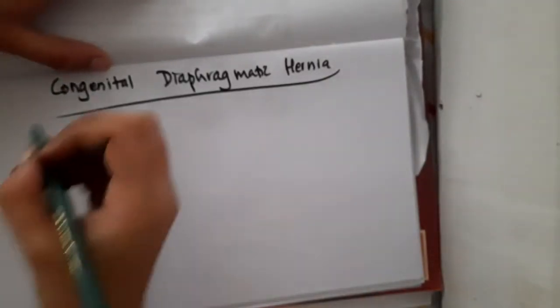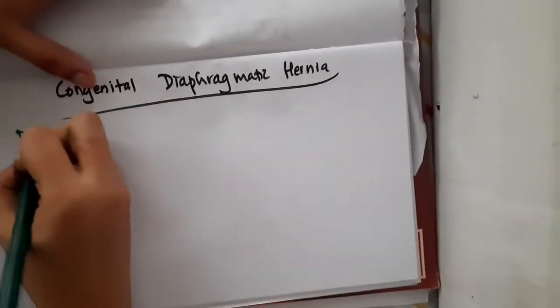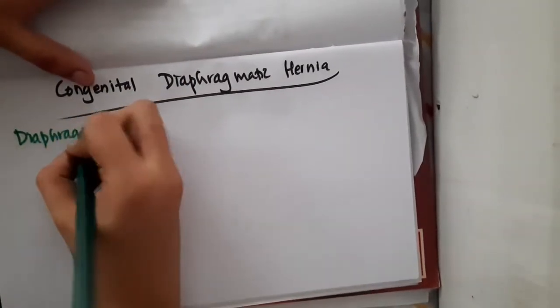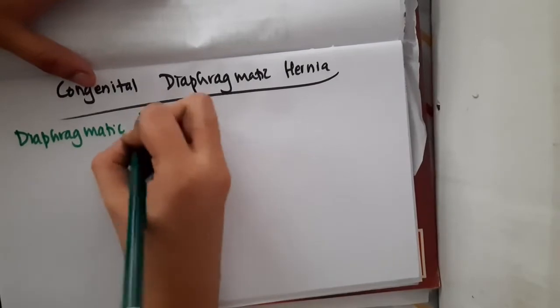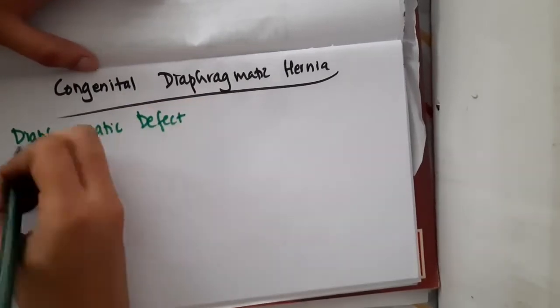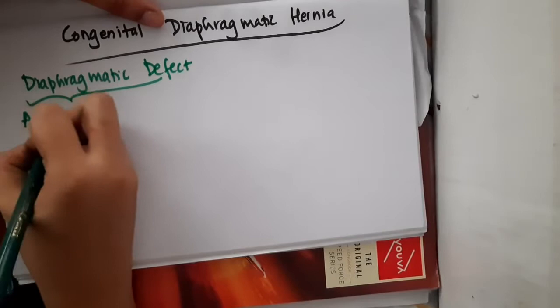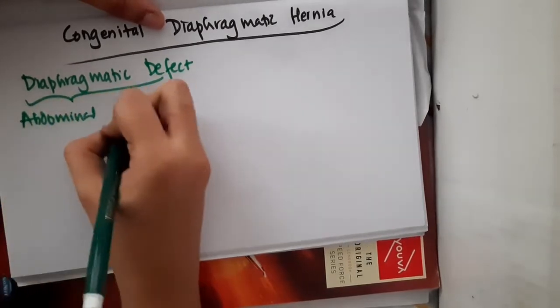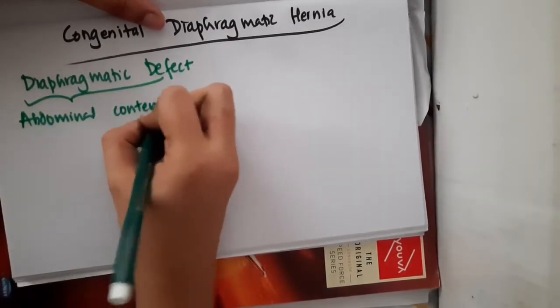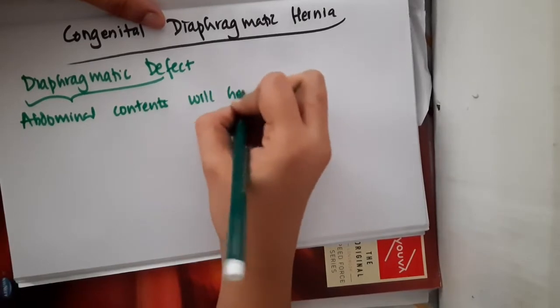In congenital diaphragmatic hernia, there is a diaphragmatic defect. Because of this defect, the abdominal contents will herniate into the thorax.